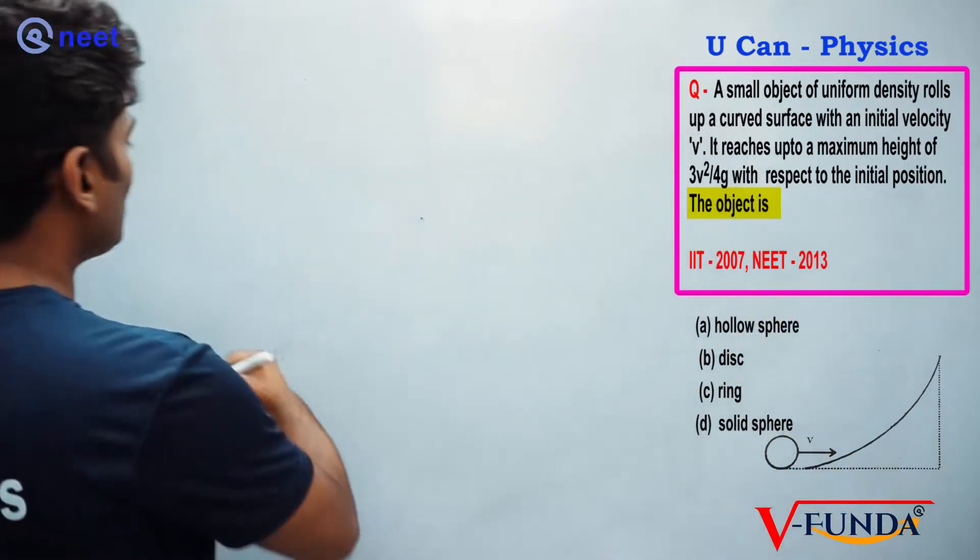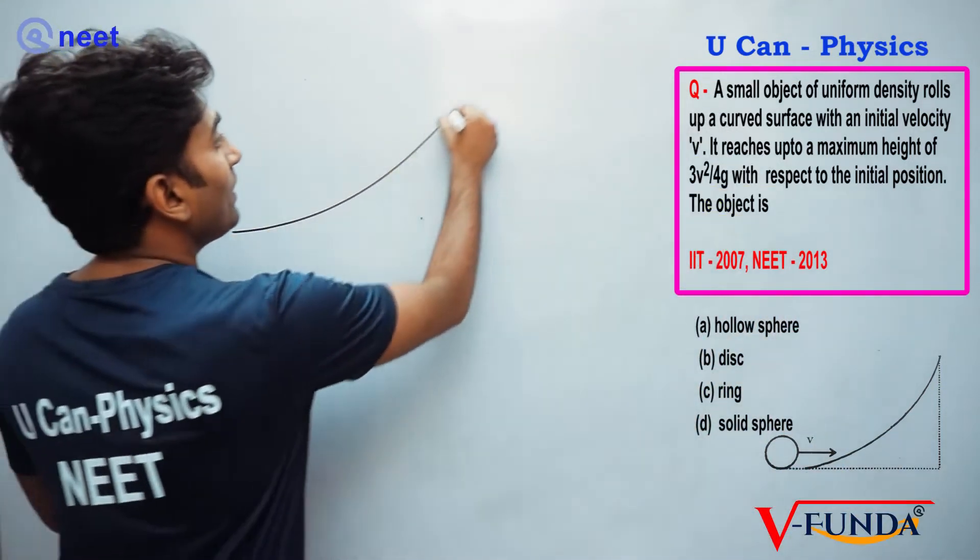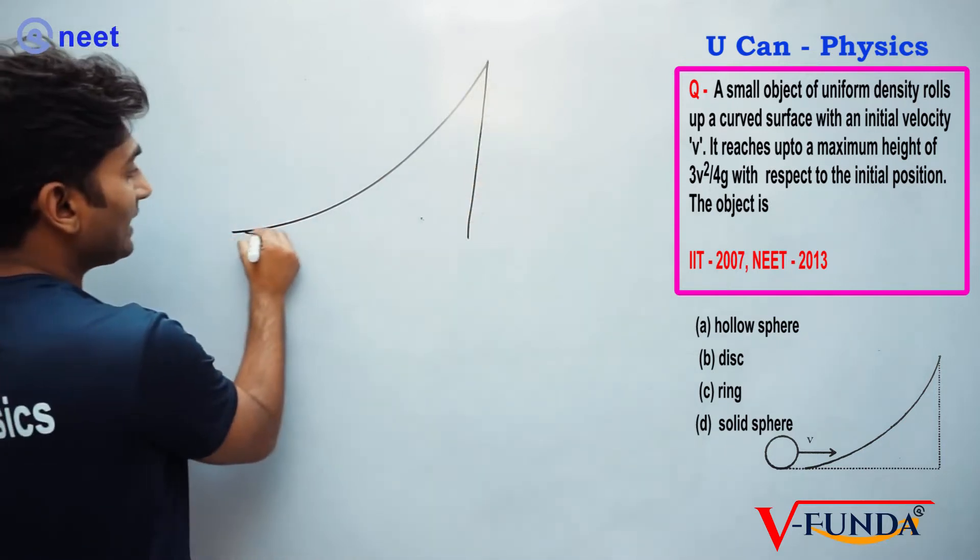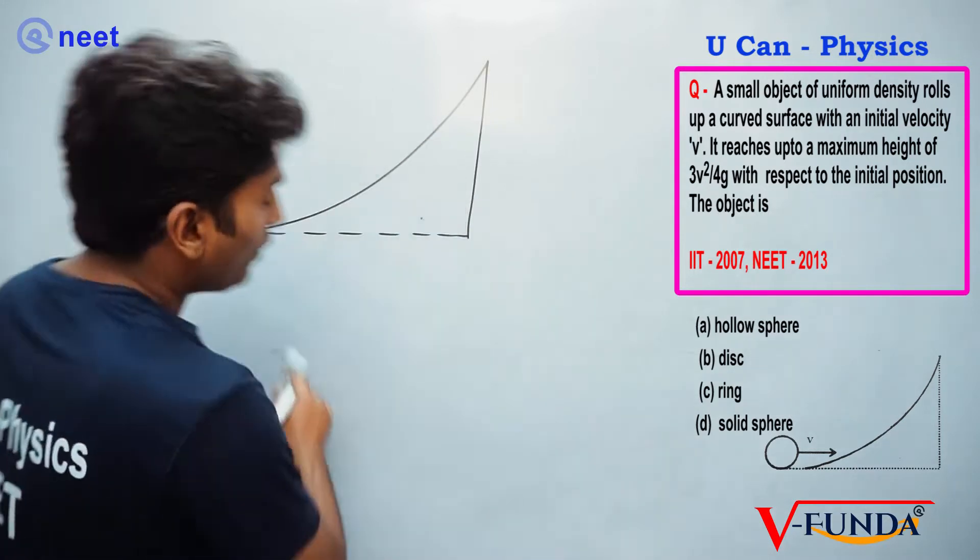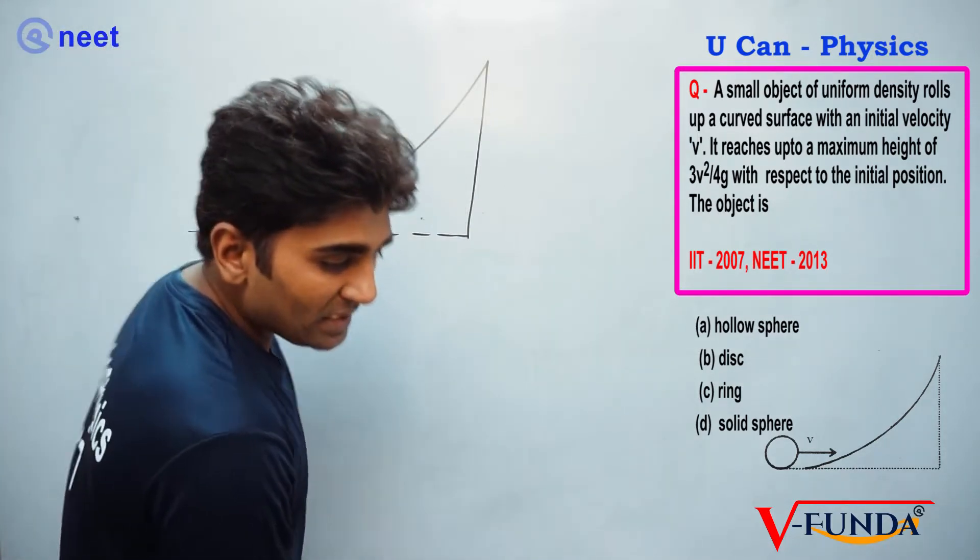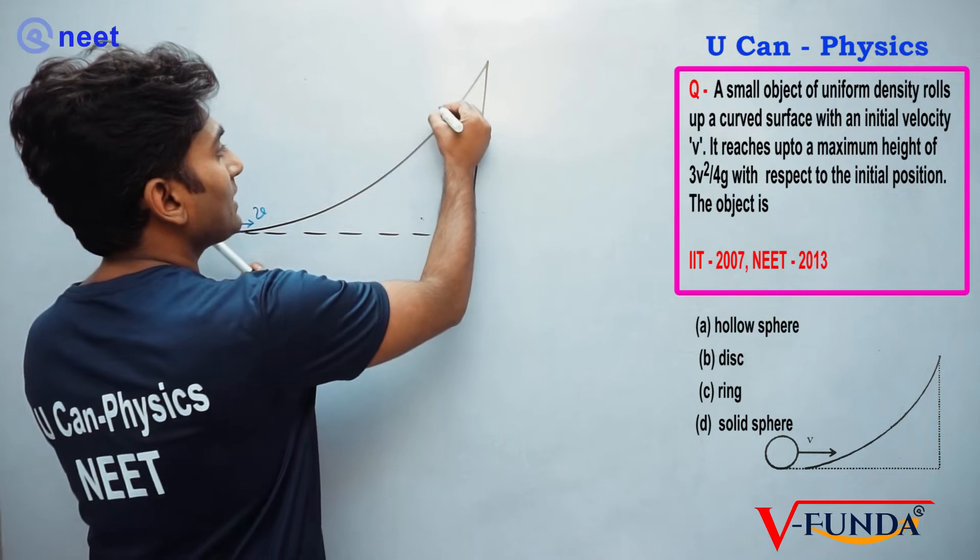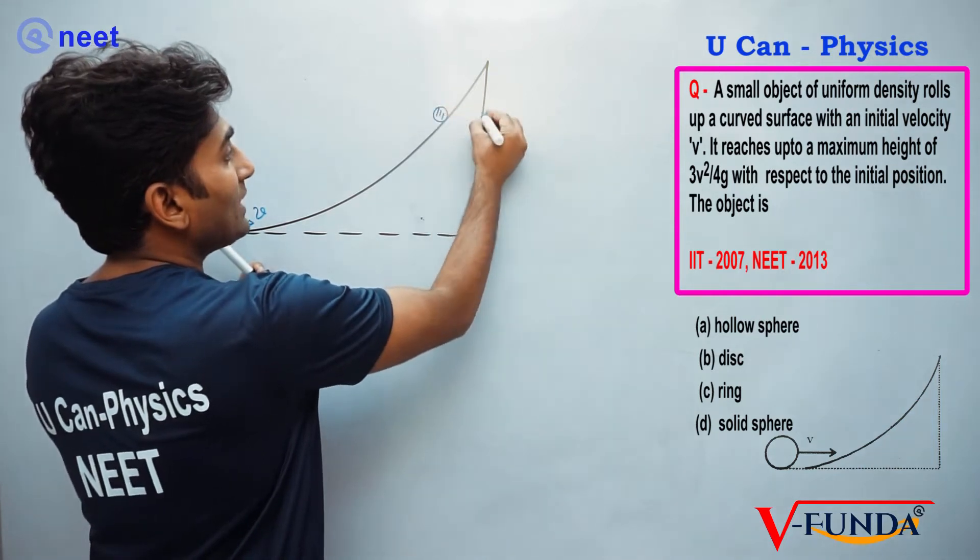The diagram is given something like this. The initial speed is V, and the object is going up.